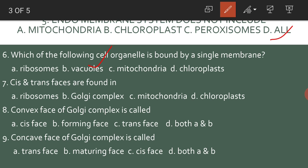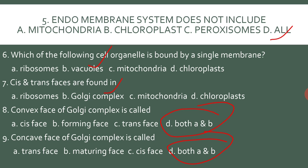Cis and trans phases are found in the Golgi complex. The convex phase of the Golgi complex is called cis or forming phase, so both A and B is the answer. The concave phase of the Golgi complex is called trans or maturing phase, so both A and B is the answer.